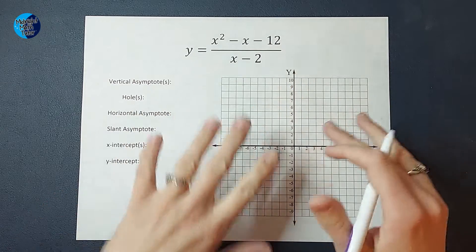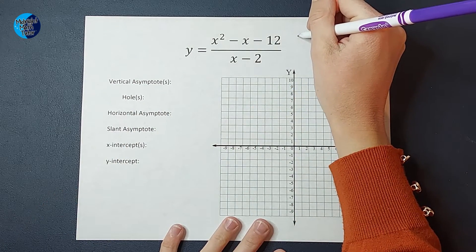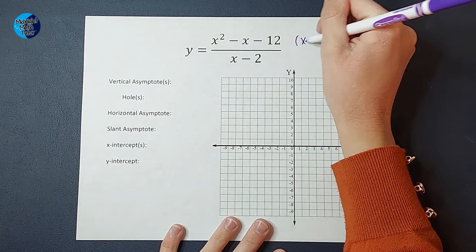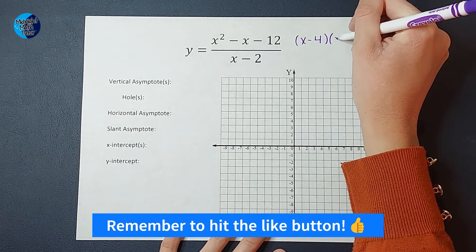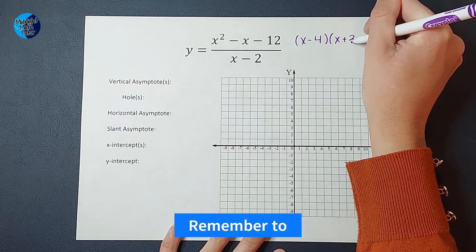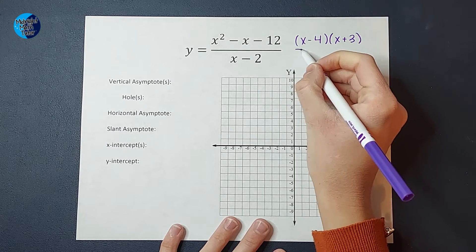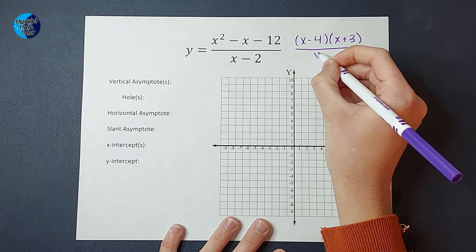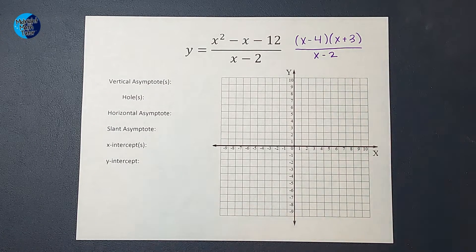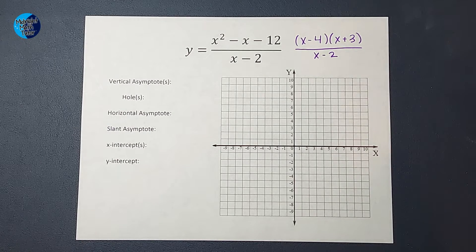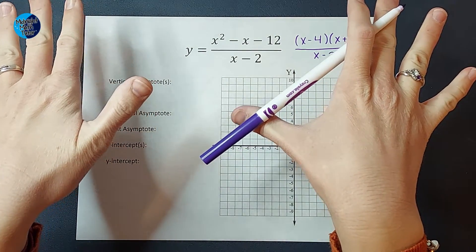If you need a factoring review I'll link one in the corner, but right here right now this factored is x minus 4 times x plus 3, and that is over x minus 2, which doesn't need to be factored anymore. From here I've already done step one. Step two is we are going to find our asymptotes.